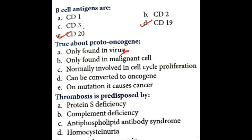Proto-oncogenes are found in human cells also; they are normally present in humans. They are not only found in malignant cells — they are normally involved in cell cycle proliferation. They can be converted into oncogene; on mutation they cause cancer. That is true.